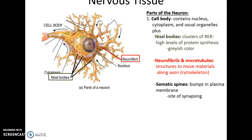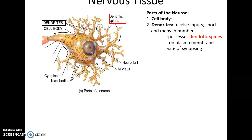Also found in the cell body are Nissl bodies — clusters of rough endoplasmic reticulum undergoing high amounts of protein synthesis with many ribosomes concentrated there, giving the cell body a grayish color. Within the cell body are also specialized cytoskeletal structures including neurofibrils and microtubules, which carry materials down to the ends of axons or occasionally back up. On the plasma membrane of the cell body are somatic spines — little bumps that are available sites for synapsing with other neurons.